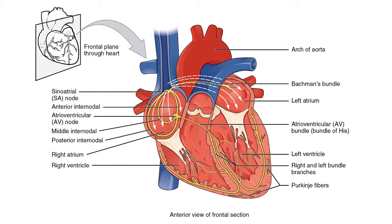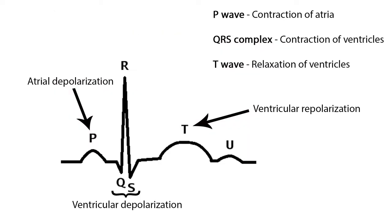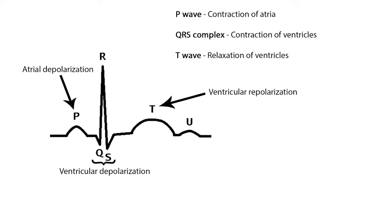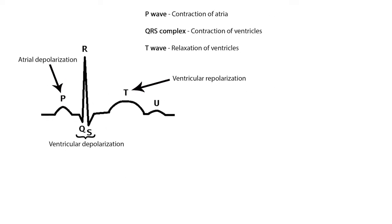The AV or atrioventricular node is the gatekeeper of the heart. It functions as a slight delay to allow all blood from the atria to empty into the ventricles and prevent any backflow. It beats at 40 to 60 beats per minute. The bundle of His branches off into right and left bundles to the Purkinje fibers, causing the depolarization or contraction of the ventricles. The Purkinje fibers fire at a rate of 20 to 40 beats per minute. The contraction of the ventricles is shown as the QRS complex on the EKG.